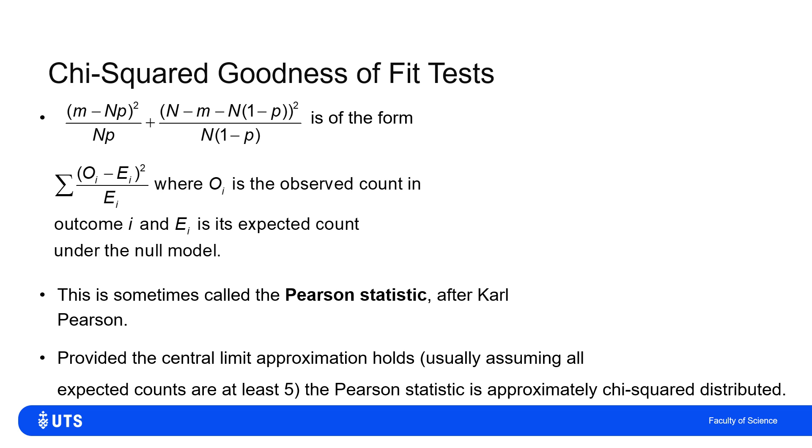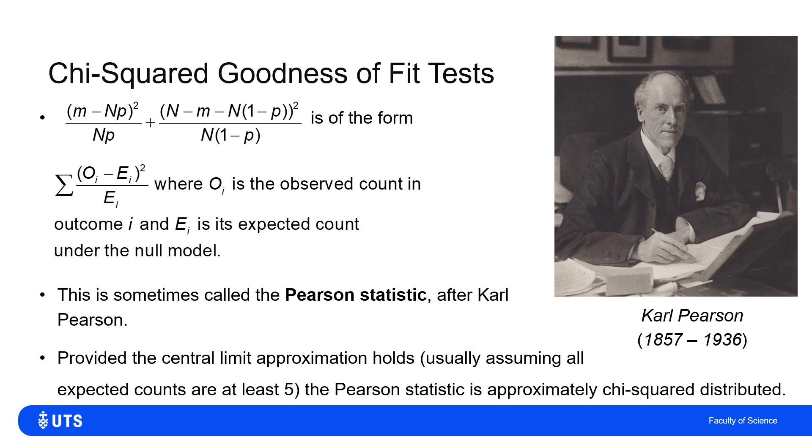We usually say we don't want to be dividing by anything with a particularly small expectation, because being slightly wrong in that denominator E can lead to the fraction blowing up, tending towards something very large. So we tend to say that if we're using this for a chi-squared goodness of fit test, we want expected counts of at least, say, five.